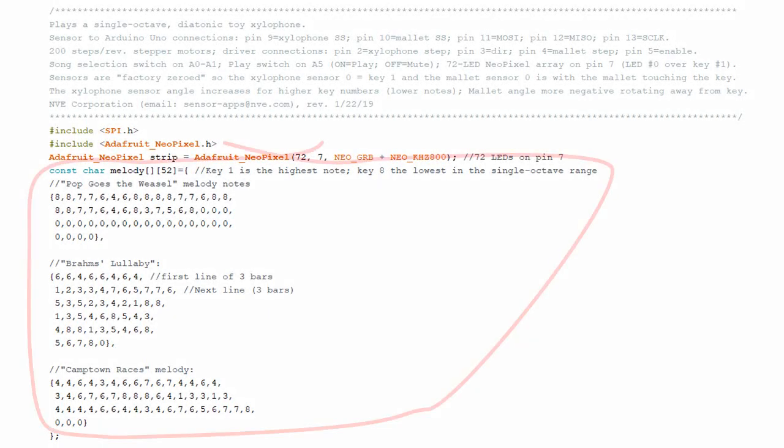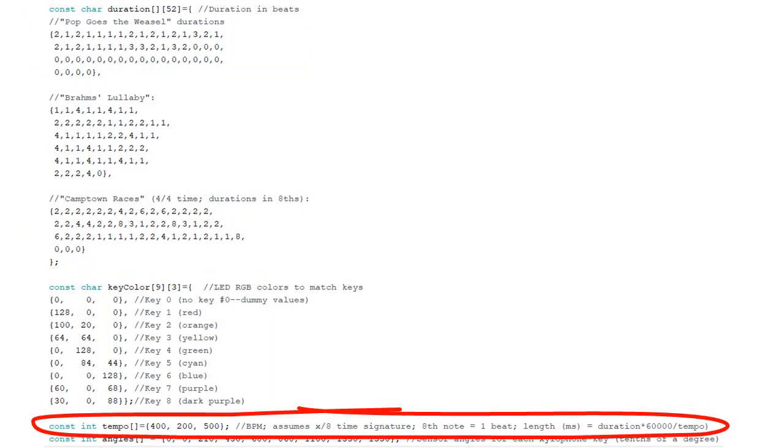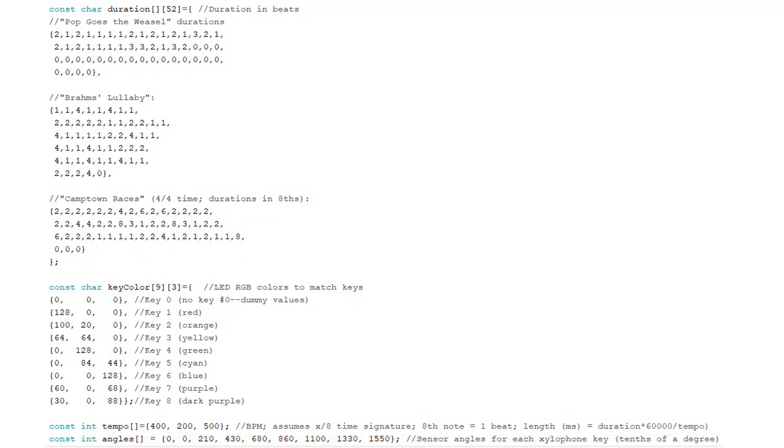There are arrays for the song notes, durations, and tempo. There's also an array with the angle of each key, since the keys are irregularly spaced.